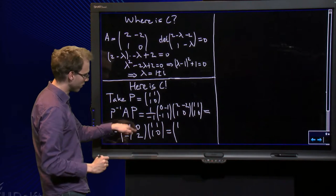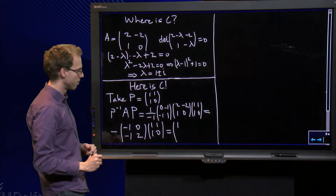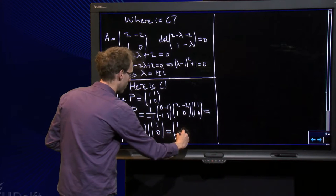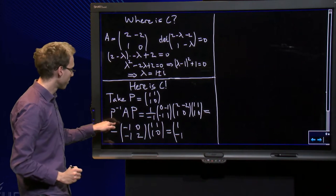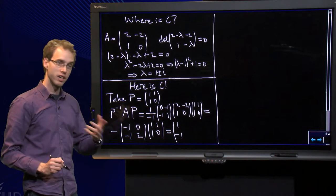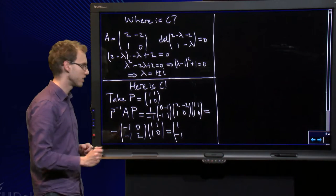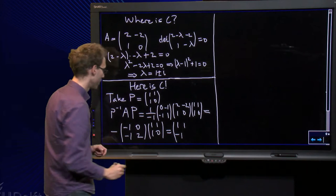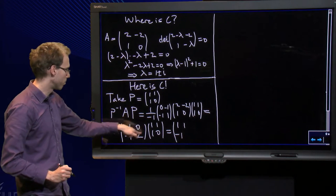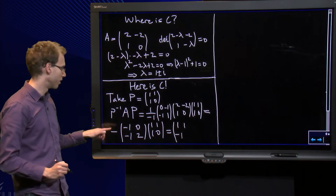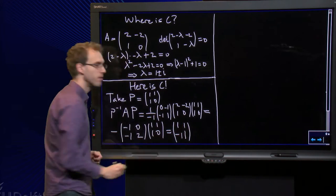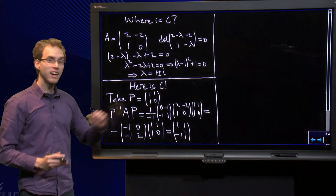In the product minus 1 plus 0 equals minus 1, with the additional minus sign we get plus 1. And finally the last entry, we get minus 1. So there is our matrix C.